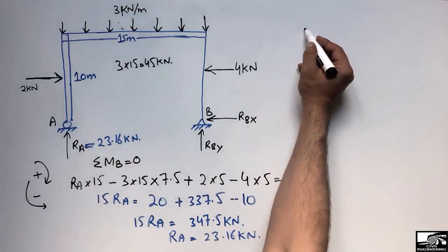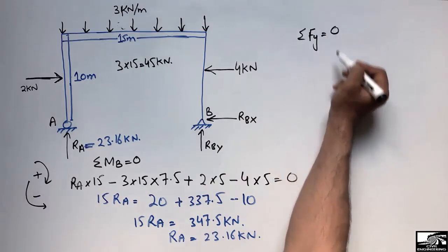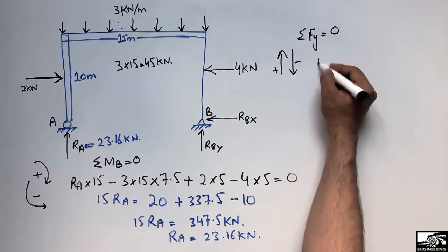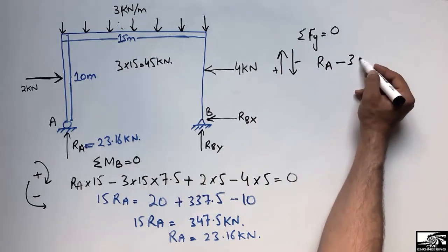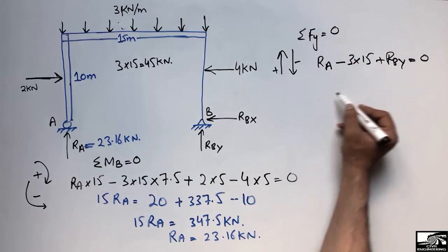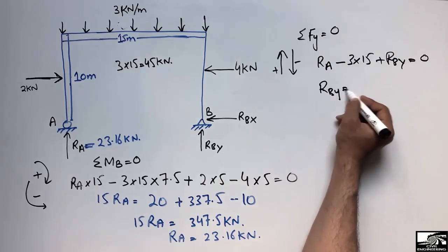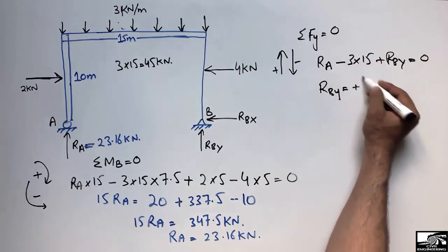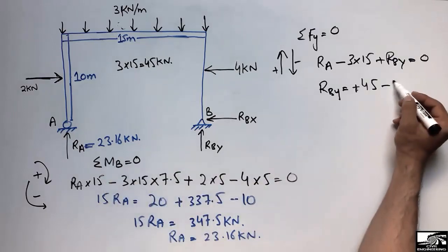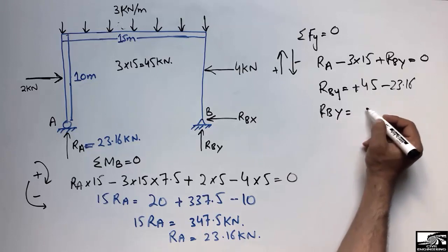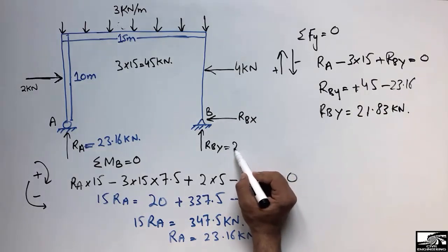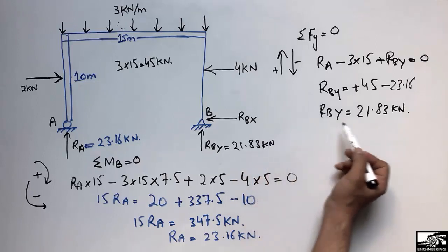To find R_BY, we take the summation of vertical forces equal to zero for the whole frame. R_A acts upward (positive) and the UDL resultant of 3 × 15 = 45 kN acts downward (negative). Assuming R_BY acts upward, summation of vertical forces equals zero gives R_BY = 45 − 23.16 = 21.83 kN. So the vertical reaction at B is R_BY = 21.83 kN.